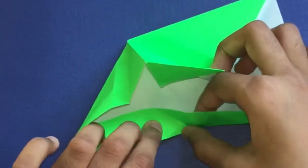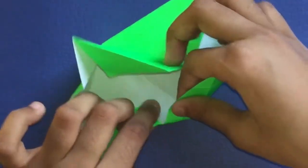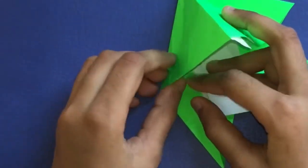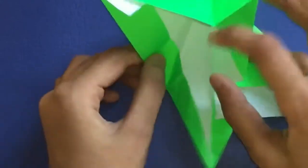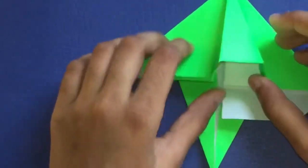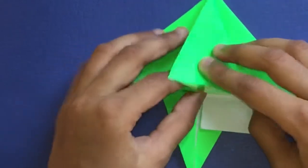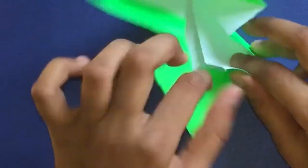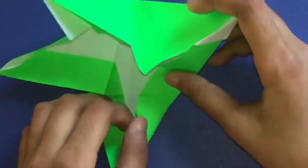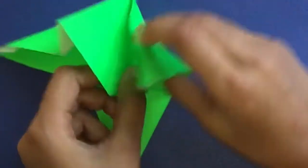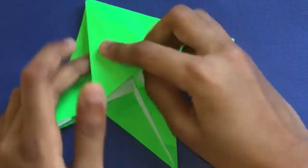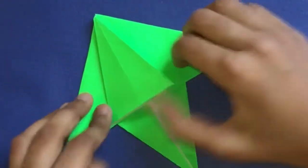You see these two lines, you're going to reverse fold on this diagonal crease and then flatten it like that.